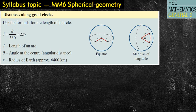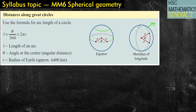Last lesson we looked at our lines of longitude, our equator, and our latitude lines. We also spoke about what a great circle was — that a great circle goes all the way around through the centre of the sphere, looking at the poles, so our north and south poles. All lines of longitude are great circles because they all go through the north and south pole.